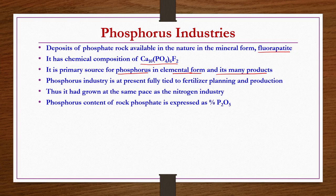Phosphorus content of rock phosphate is expressed as percentage P2O5, similar to how nitrogen content is expressed in nitrogen fertilizers. If it is more than 30 percent P2O5, it is considered high grade rock phosphate. If it is less than 20 to 25 percent P2O5, that is phosphorus pentoxide, it is considered a low grade rock.